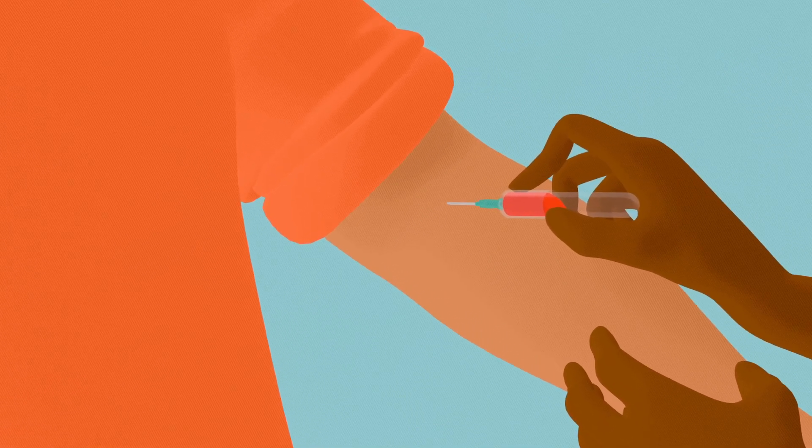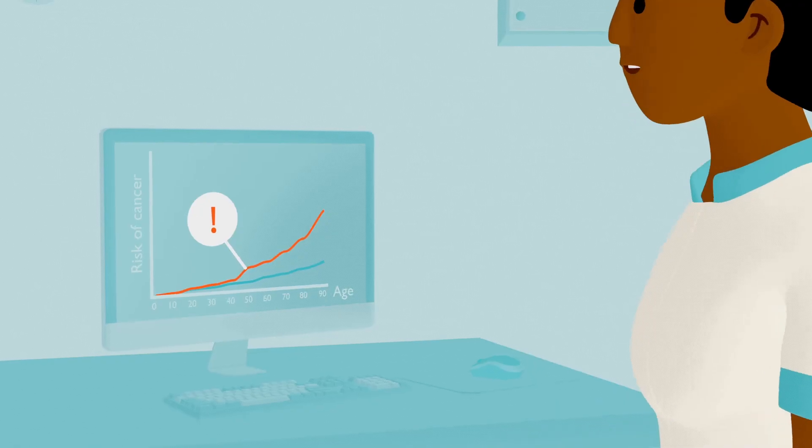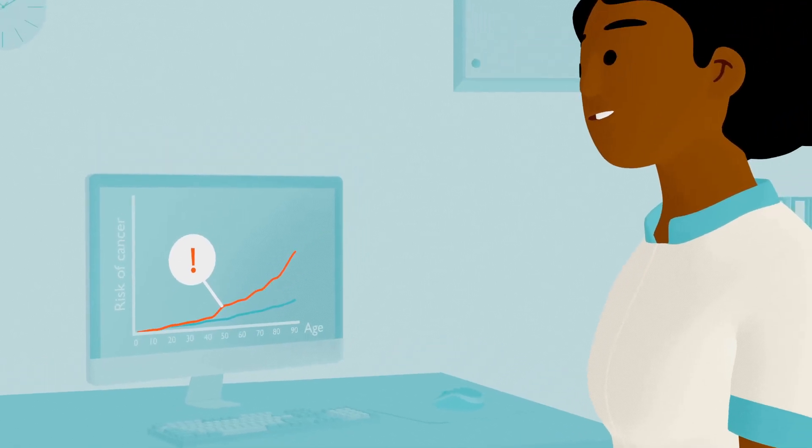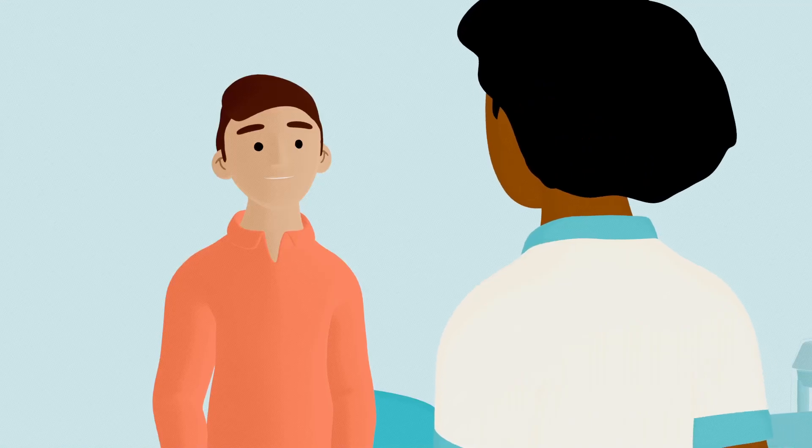Men with faulty HRR genes may develop prostate cancer at a younger age than is typically seen. It's for this reason that it's important for men under 50 who develop prostate cancer to talk to their doctor about genetic testing.